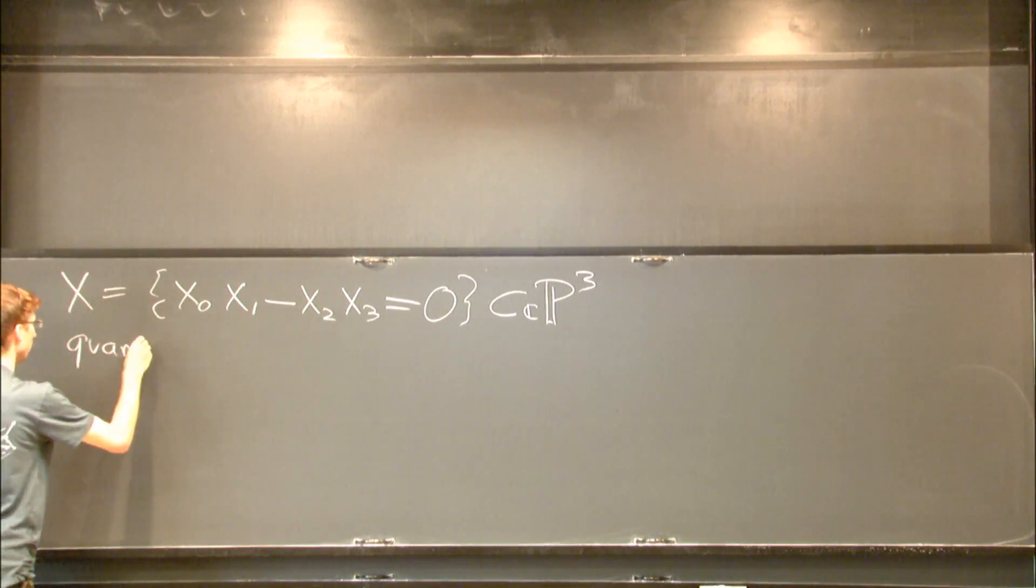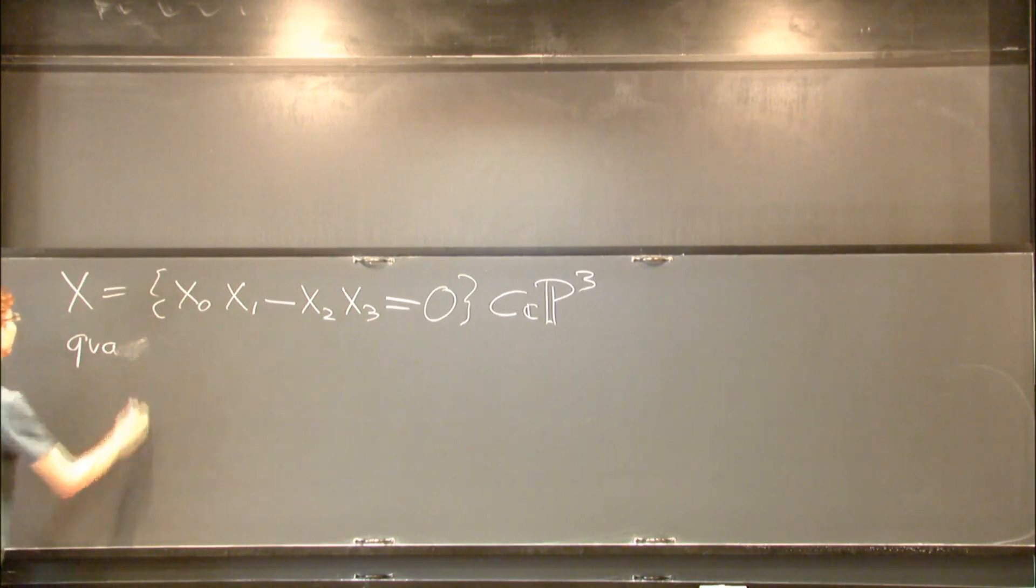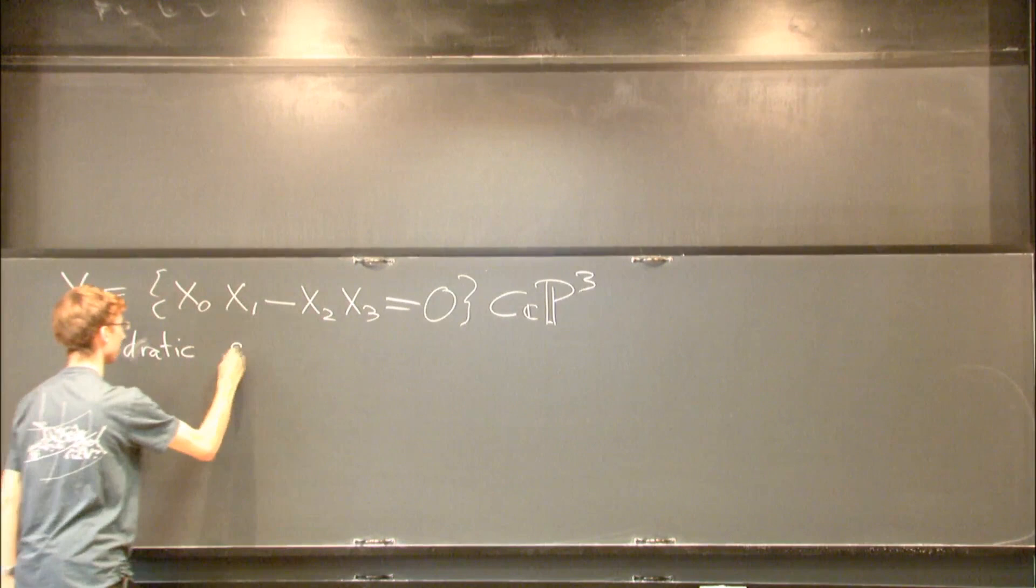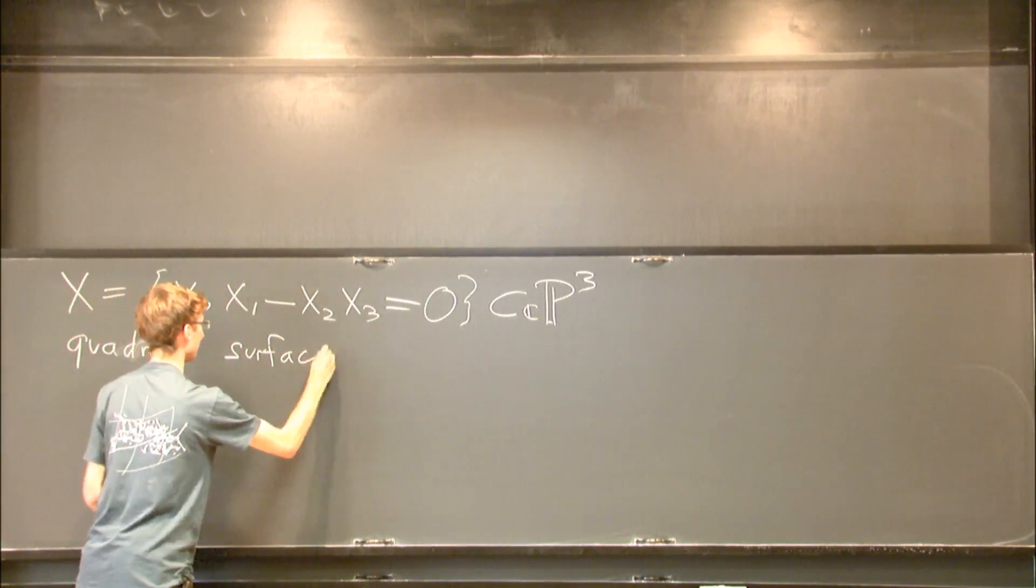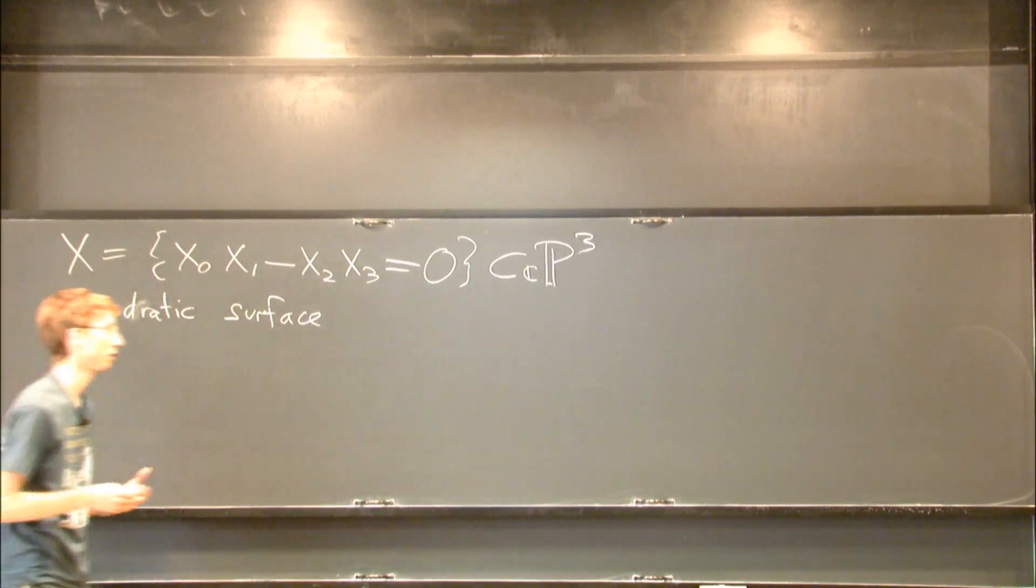So this is a quadratic surface. Since it's four-dimensional, I can't really draw it, but you can draw its real locus.